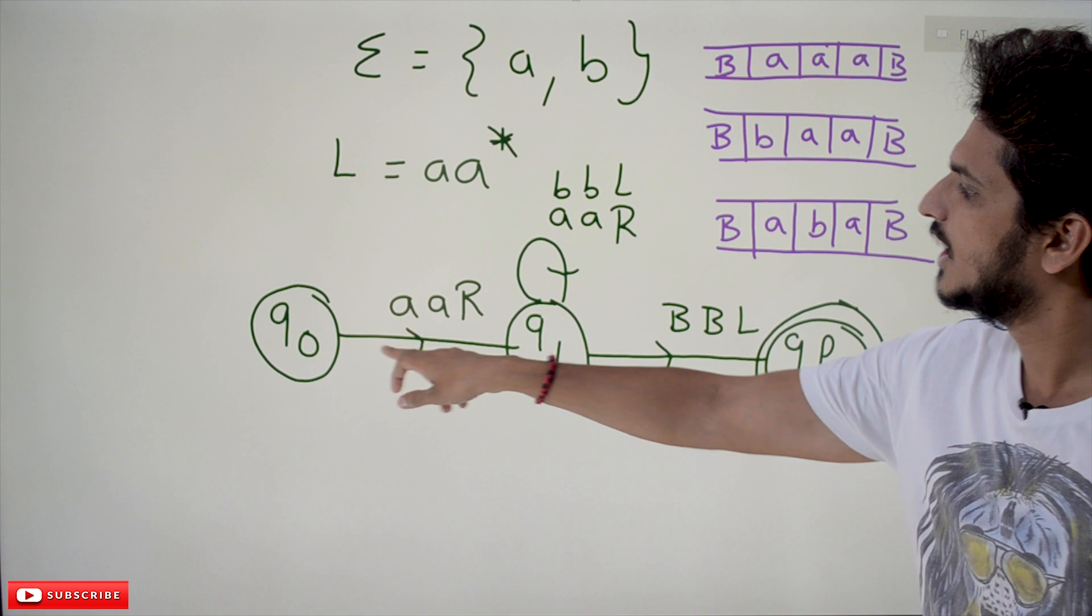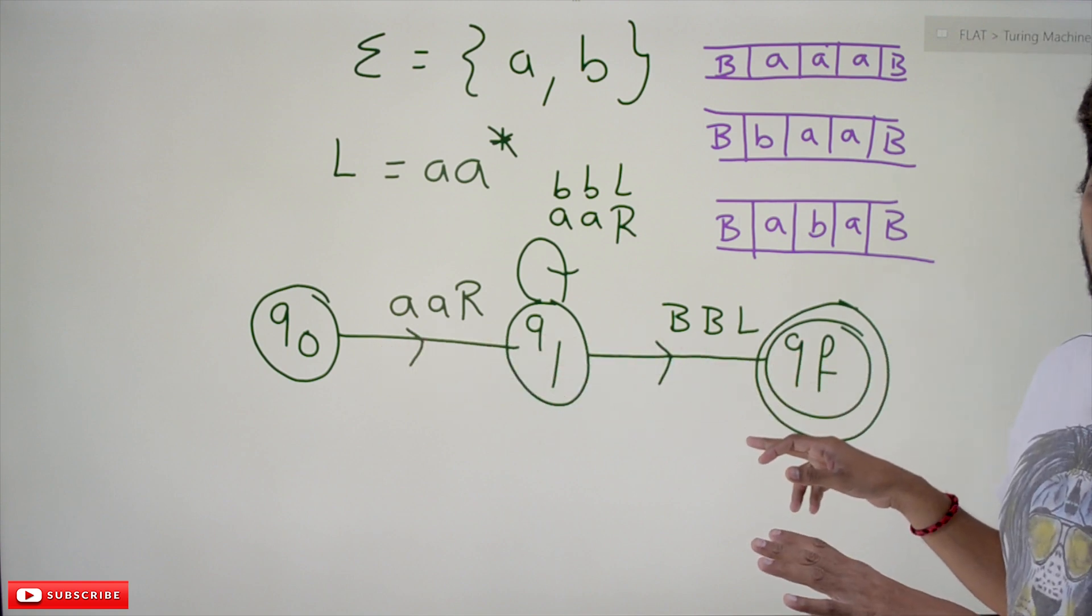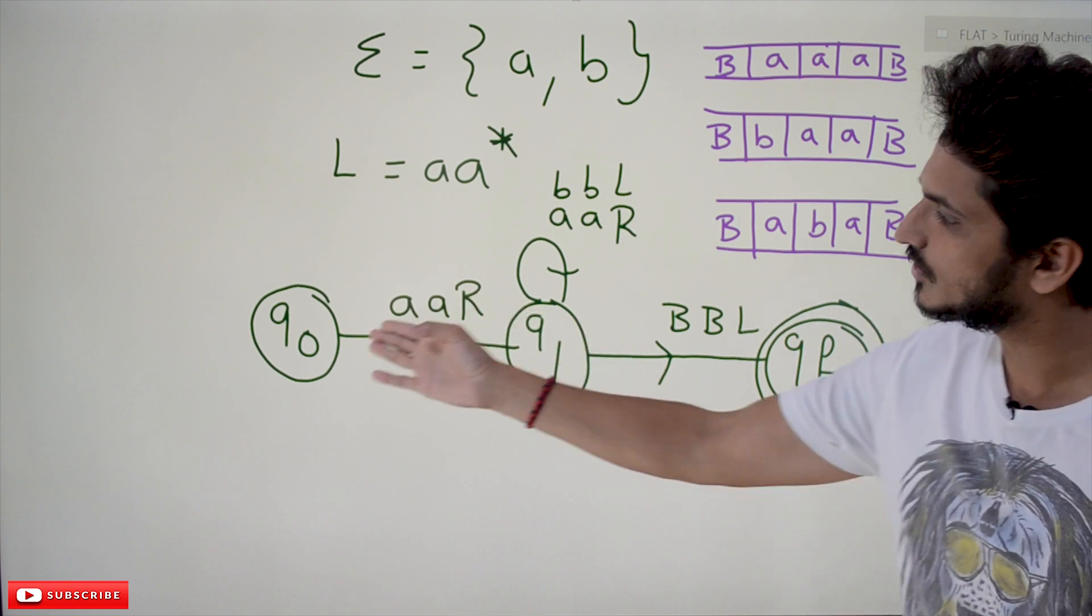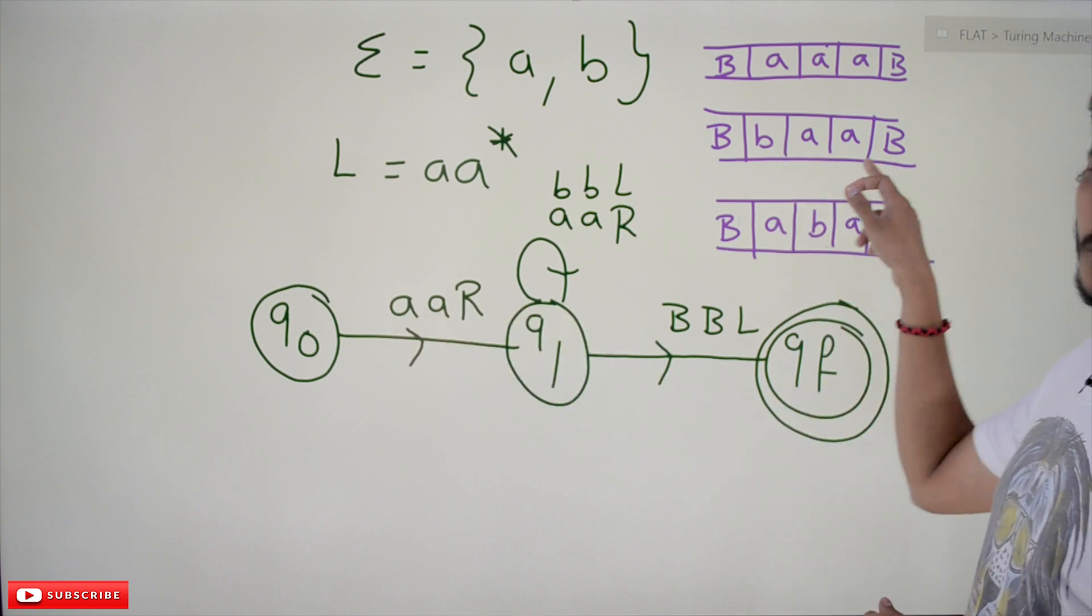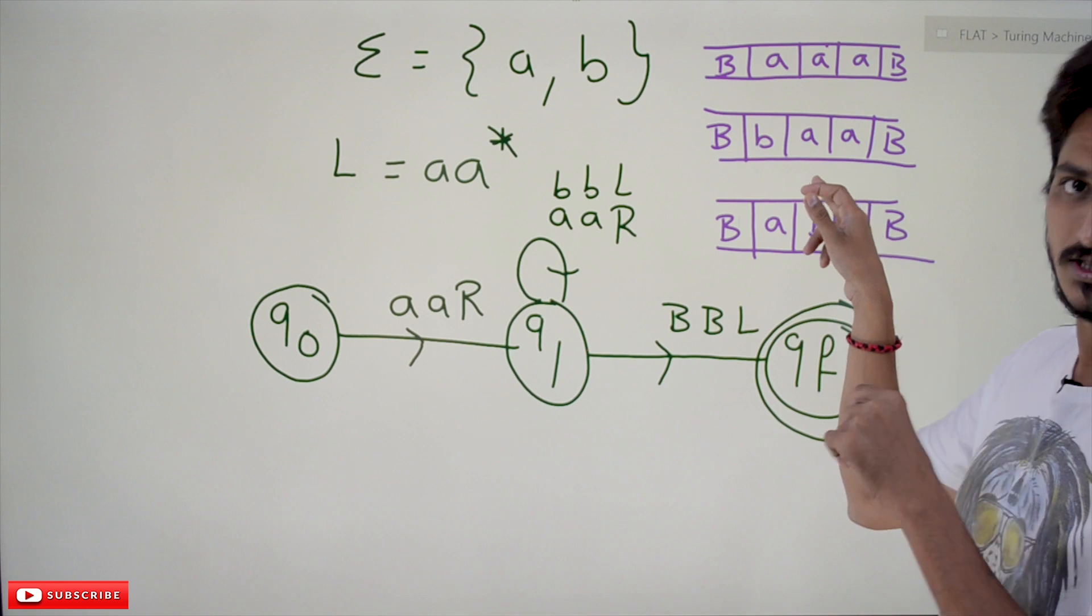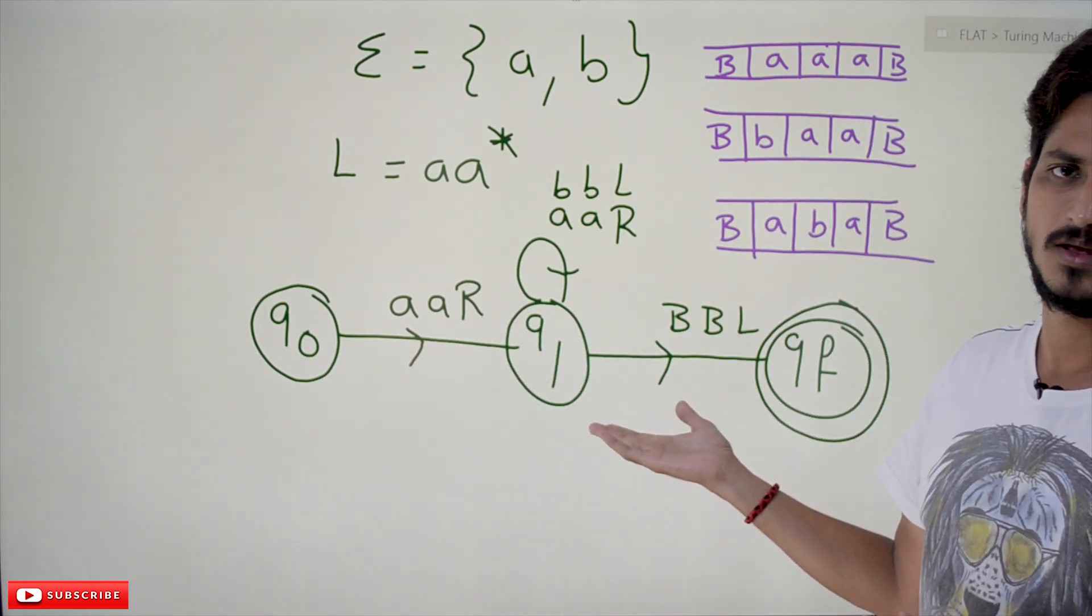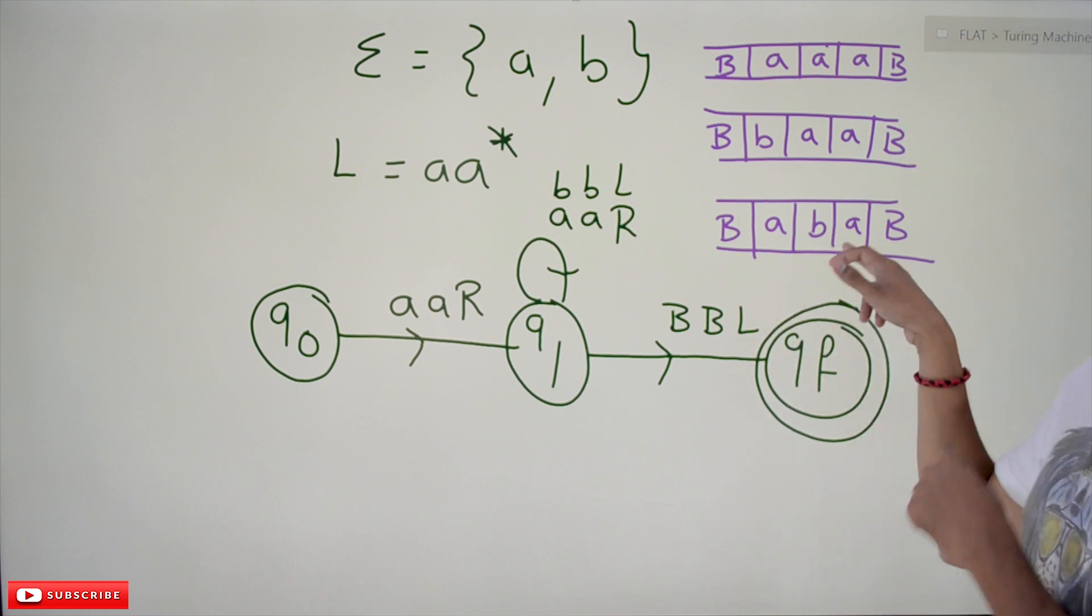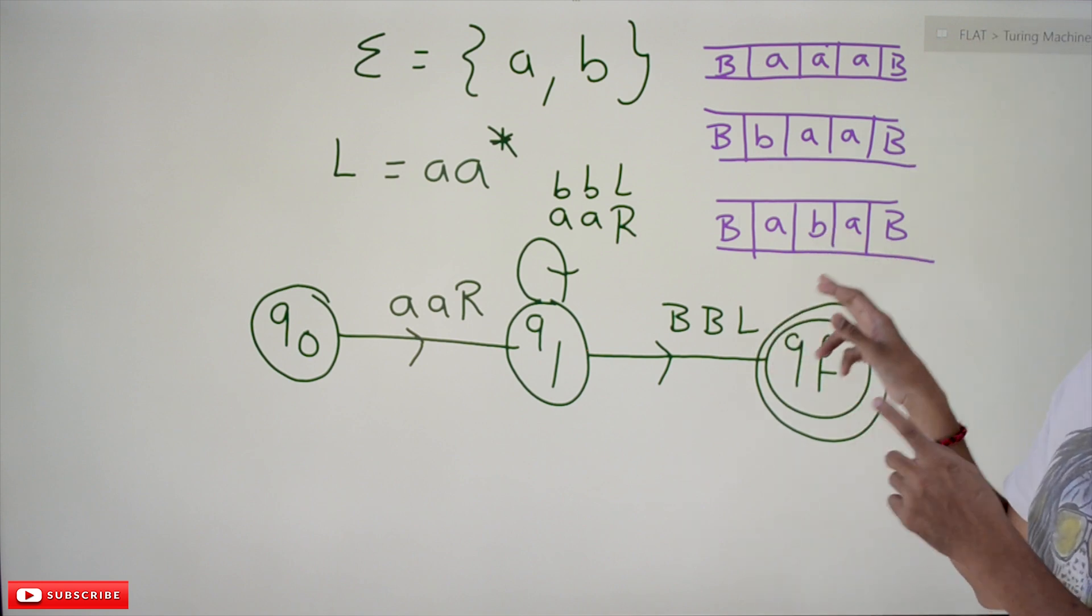For this no input, this input should not be accepted - yes it is rejected by our Turing machine. On Q0 we did not mention about B. But for the third input A B A, our Turing machine has to reject it, but it is converting it as a loop.